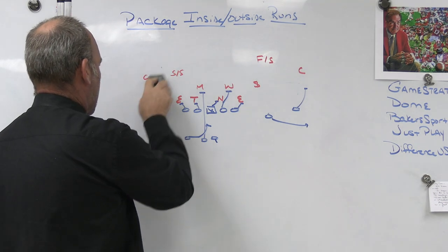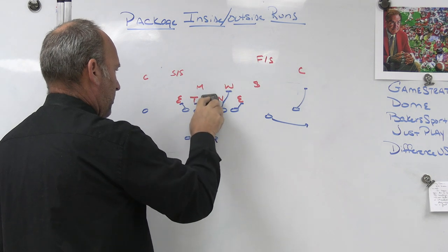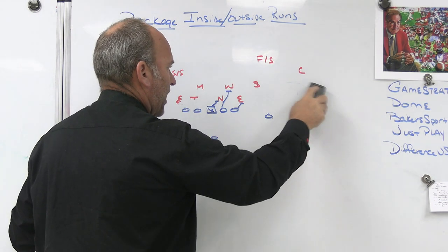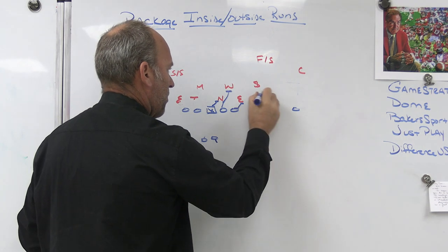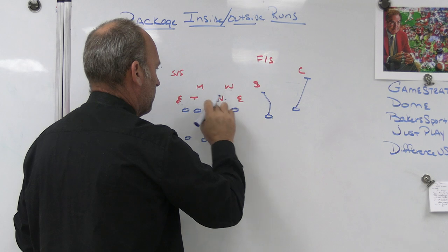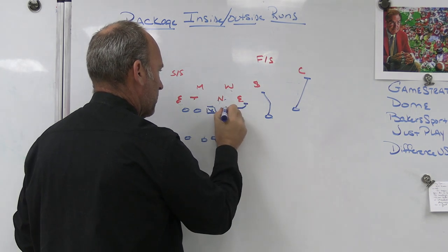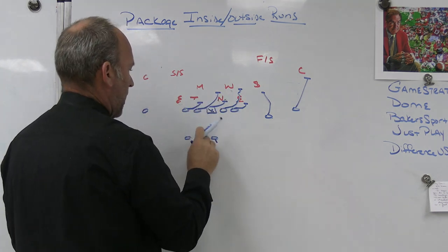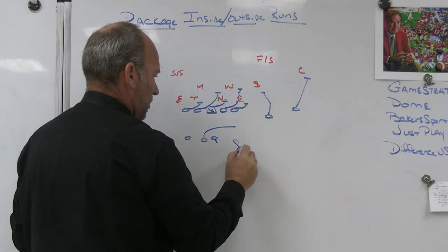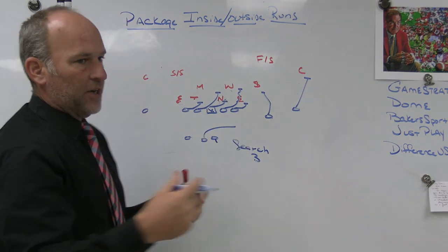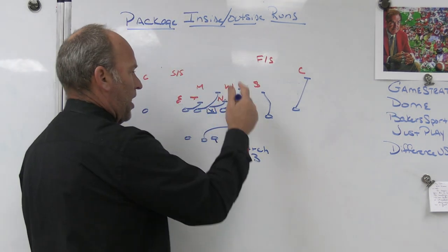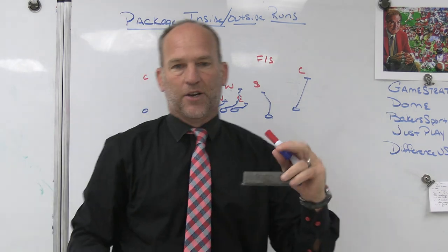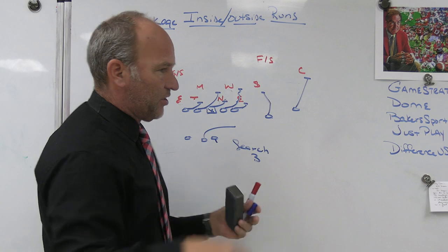What I would do is I would pair that with probably wide zone to the field, and now I have inside run to the single side, outside perimeter runs to the strong side, so now I would pair that with our wide zone stuff to the field. And now what I would do is I would take the front back and he would be the search three player. And when I say search three, what I mean is he's going to run as if he's got the football. He's going to read the block on the five technique.